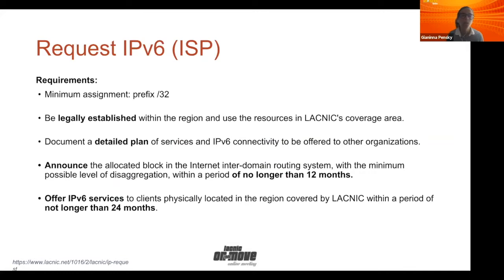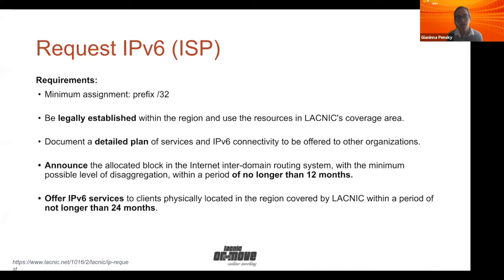Let's go to how to request IPv6. You have different requirements if you are an ISP — an internet service provider — or an end user. For ISPs, the minimum assignment we usually give is a prefix /32, but if you need more, you can ask for more. You have to be legally established in our region. We'll ask you for documentation of your plan about how you're going to use the IPv6 block, which ASN you're going to announce it with, and a commitment to use it in no longer than 12 months. You will also have to offer IPv6 services to your clients in no longer than 24 months.